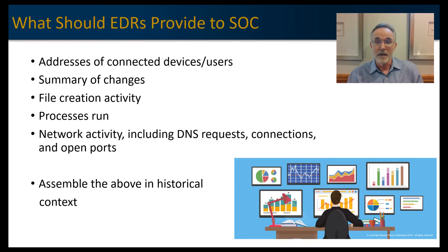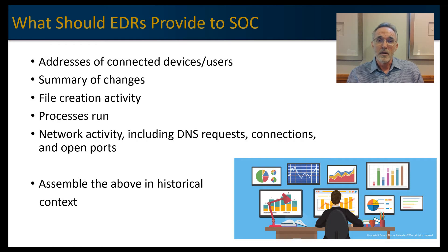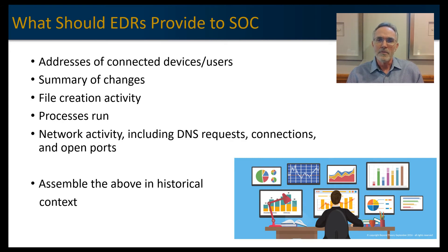What should EDR provide specifically to the SOC to help them do their jobs? We want to know what else might have been in contact with a given endpoint. If we're troubleshooting an event, we want to remediate that device but also know who else has interacted with it. We want to know what changes occurred on the device — whether they were valid or part of the threat event — what files were created, what processes were running, and what other network activity happened, such as DNS requests, additional connections, and open ports. All of that information should be provided in a historical context. Event chaining is critical for security analysts to evaluate not only the specific endpoint but determine what else has been impacted.